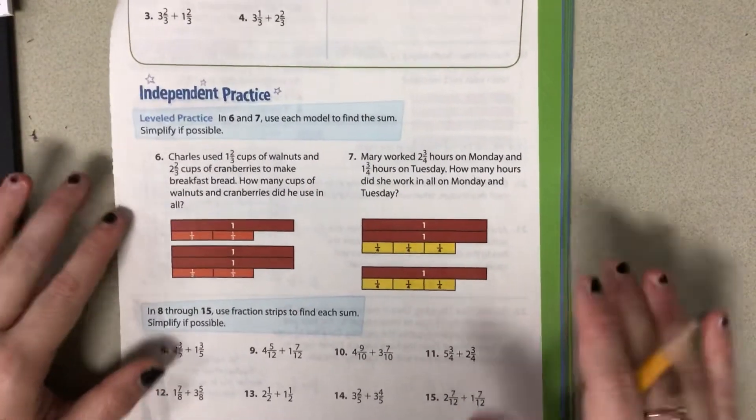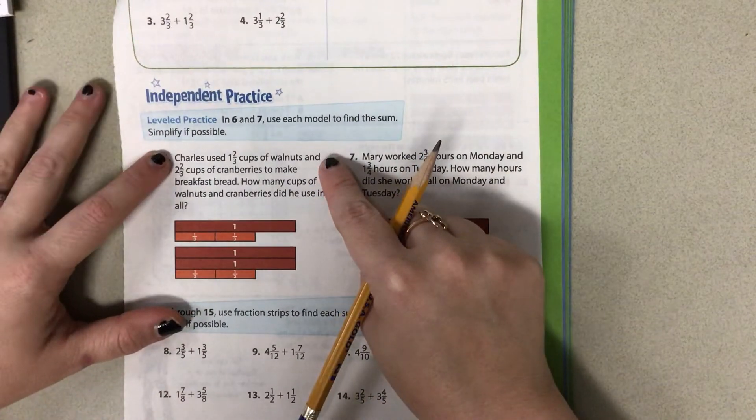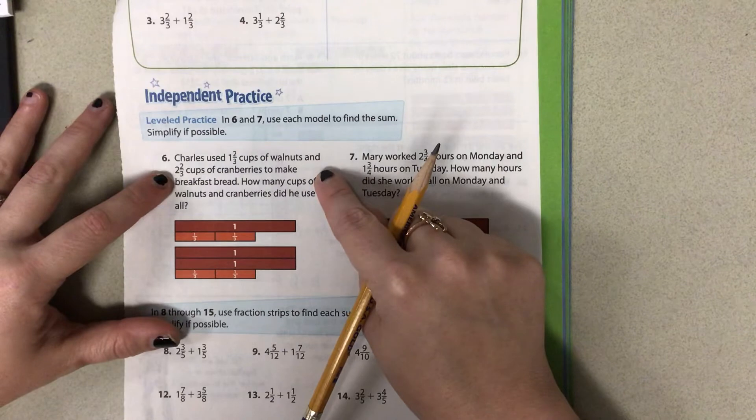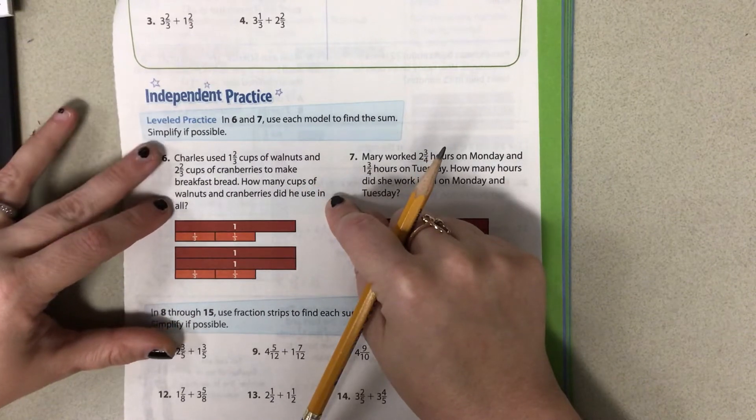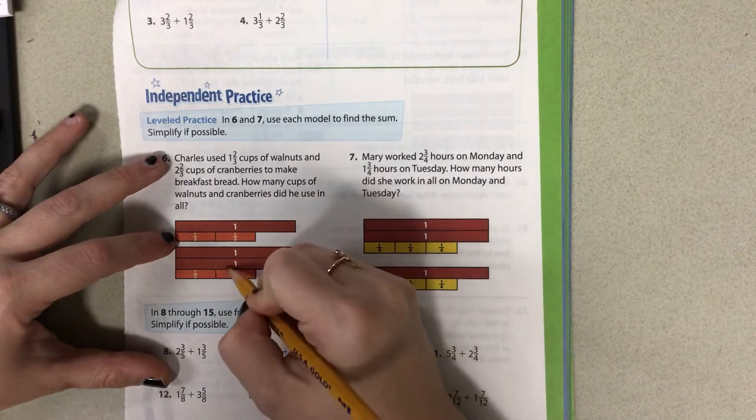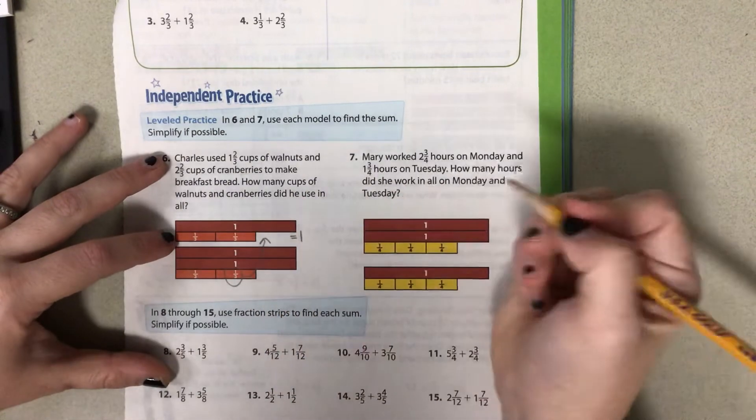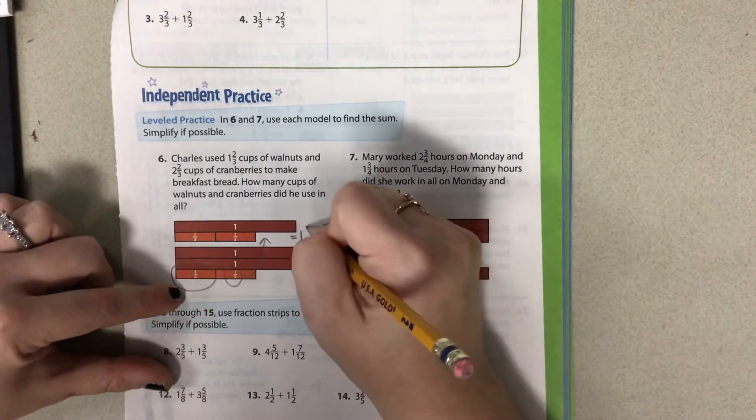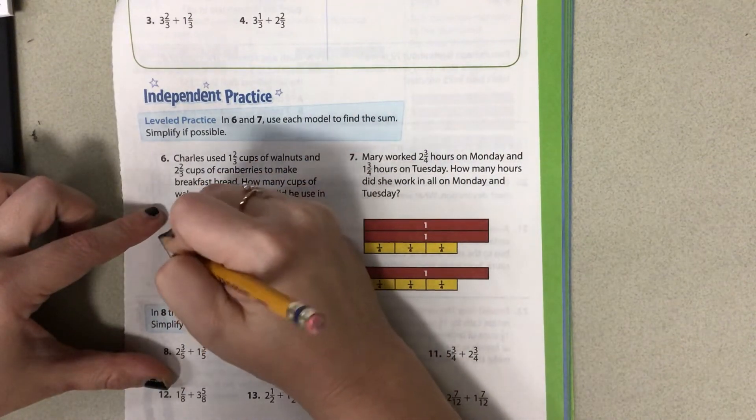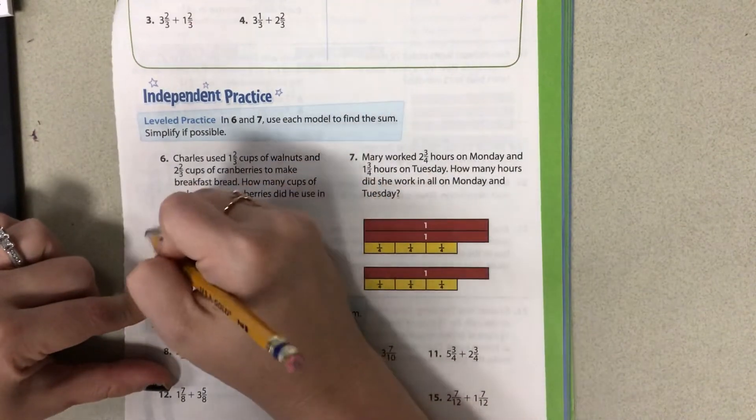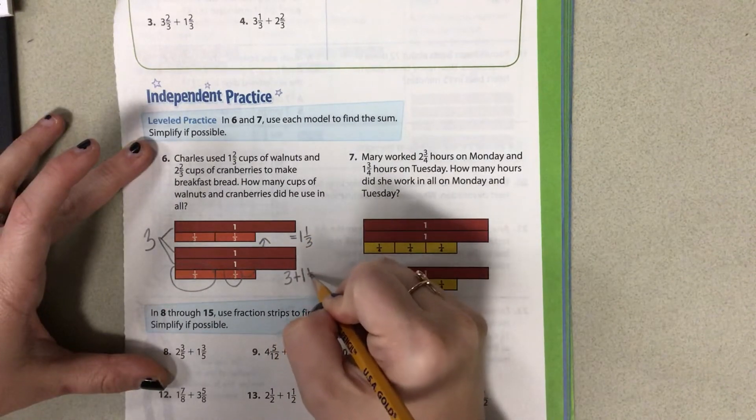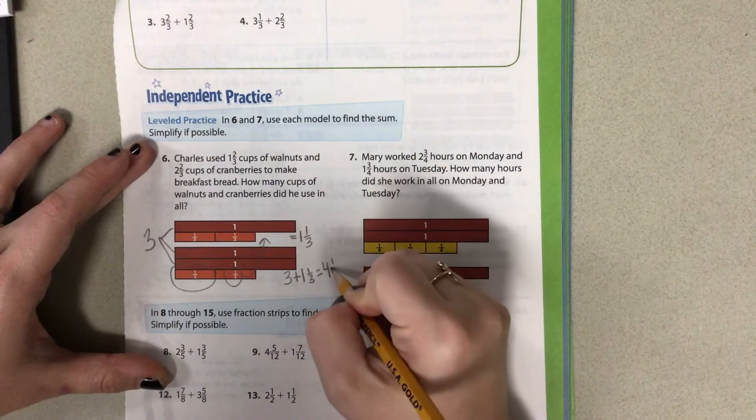All right. So we're going to kind of look at it again. So Charles used 1 and 2 thirds cups of walnuts and 2 and 2 thirds cups of cranberries to make breakfast bread. How many cups of walnuts and cranberries did he use in all? We start with the fractions. So here we have 2 thirds and 2 thirds. Well, if I bring this third up, we can see that that would give me a whole. And then I have this third left over, which gives me 1 third. Then you can add your whole numbers here, your whole fraction bars, 1, 2, 3. Then you have to add them together. 3 plus 1 and 1 third gives me 4 and 1 third.